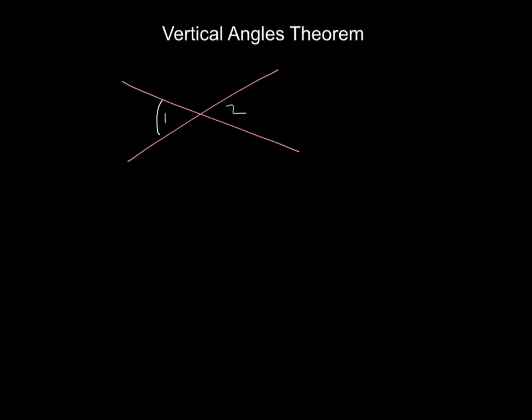And we can make little marks here like this to show that they are congruent. In other words, angle 1 is congruent to angle 2.